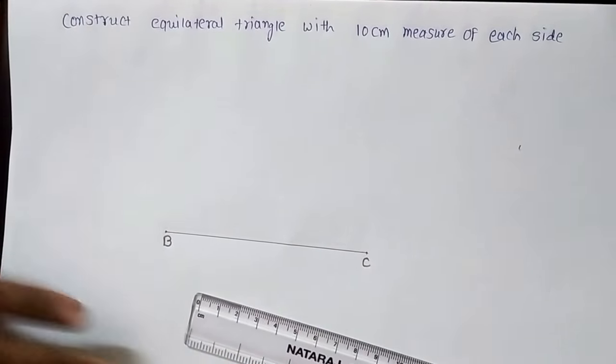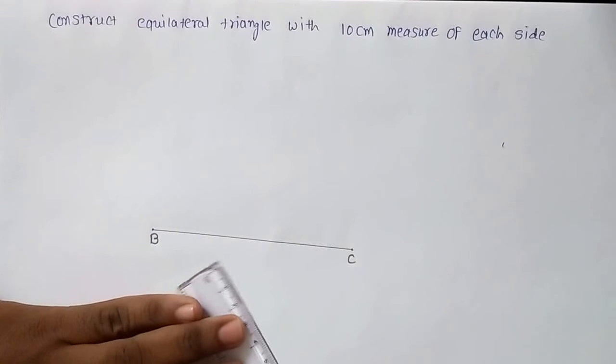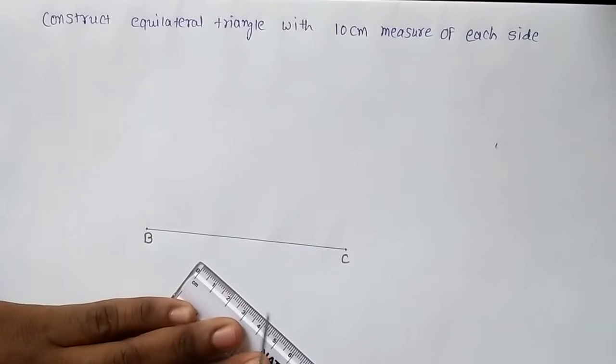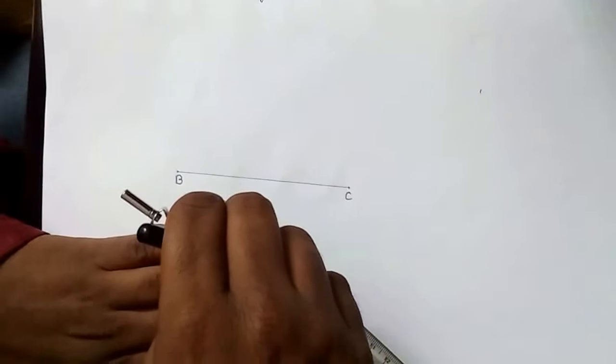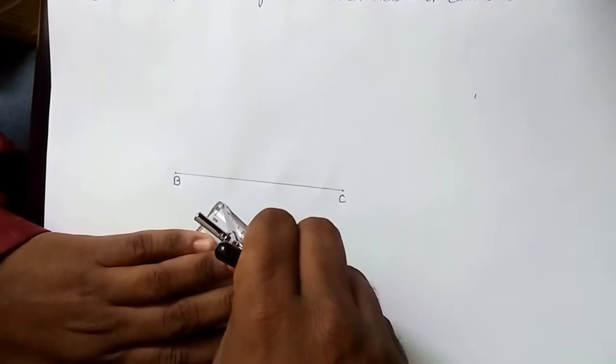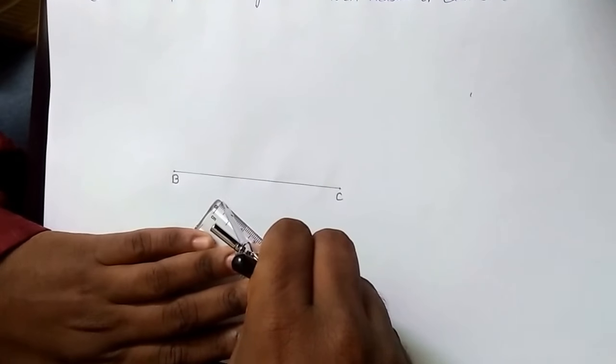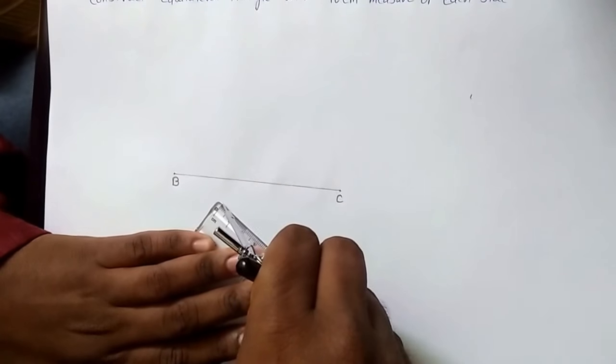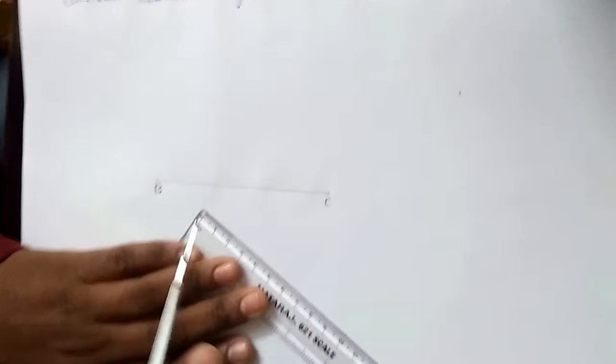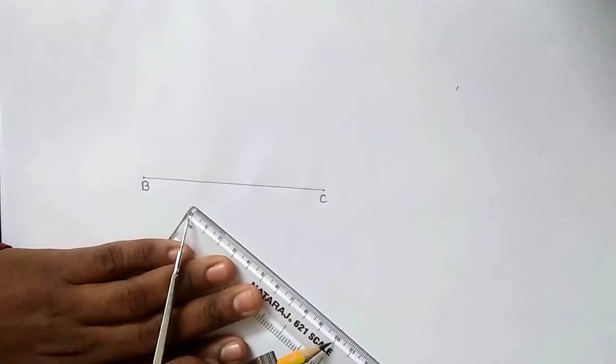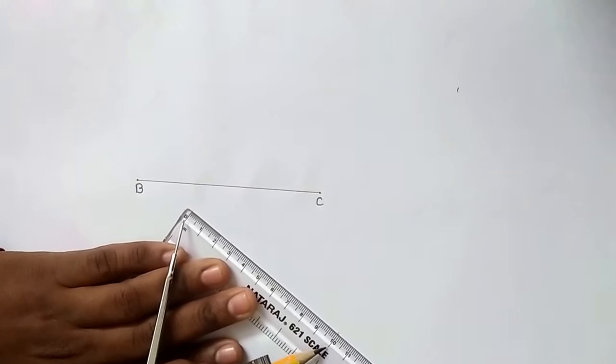So for that I can take measure of 10 cm on the scale from here. Let me take it 10 cm. You can see here it is 10 cm. You can see even 0 to 10, right?